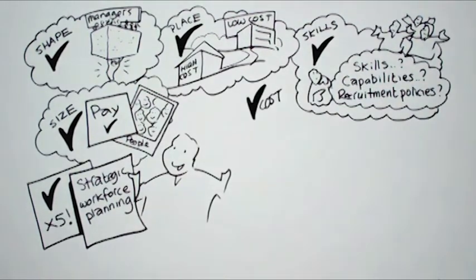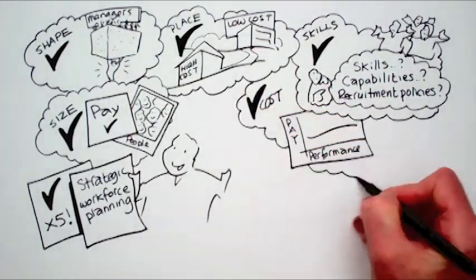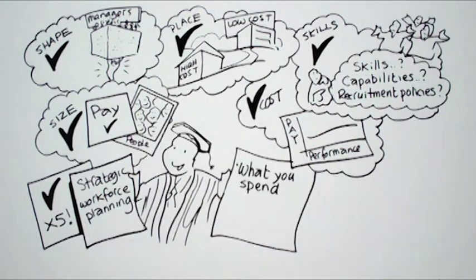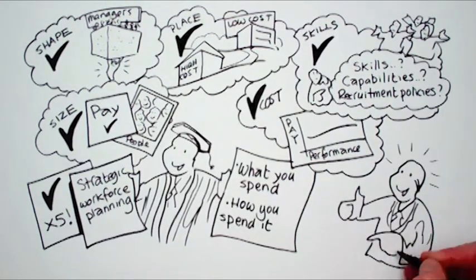And fifth, right cost. Are you paying at the right levels for the performance you're getting? Once you've worked all that out, you can be truly smart about what you spend and how you spend it. And as Ed now knows, that makes CEOs very happy.